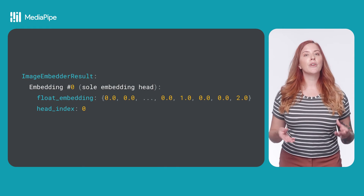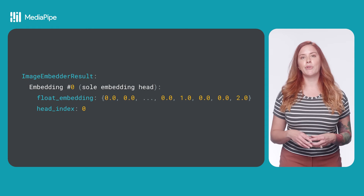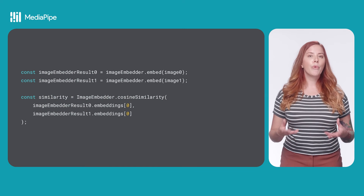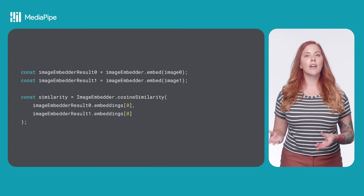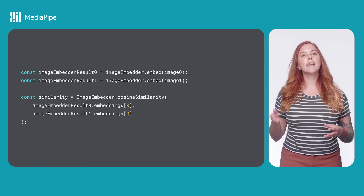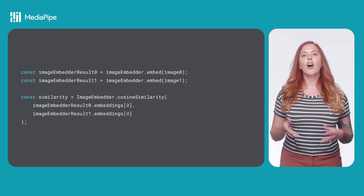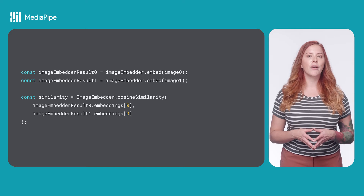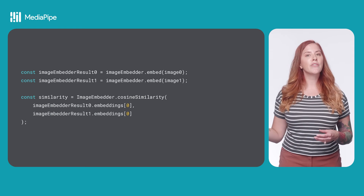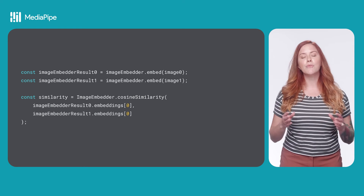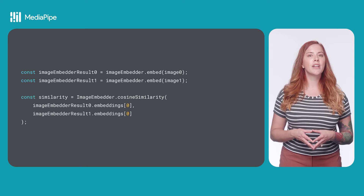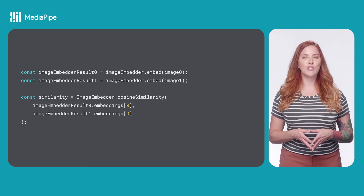The image embedder result has an embedding property in which you can find the float embedding as an array of float values. But rather than access the embeddings directly, you will likely be interested in the cosine similarity. Run image embedder dot embed on both of the images you want to compare, and then run the image embedder dot cosine similarity method, passing the first embedding of each embedding result. The similarity will be a number between negative 1 and 1, indicating how alike the images are.